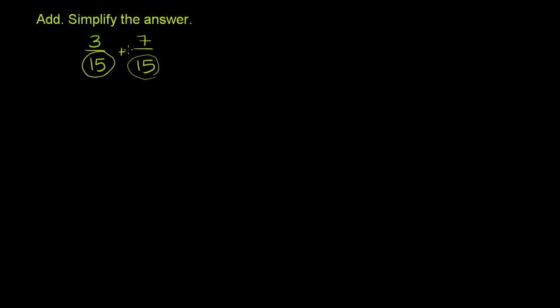So if you add these two fractions, your sum is going to have the same denominator, 15, and your numerator is just going to be the sum of the numerators. So it's going to be 3 plus 7, or it's going to be equal to 10 over 15.